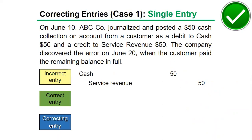To illustrate how we make correcting entries, here is the first case, and we will use the single entry method. On June 10, ABC company journalized and posted a $50 cash collection on account from a customer as a debit to cash $50 and a credit to service revenue $50. The company discovered the error on June 20 when the customer paid the remaining balance in full. The incorrect entry has cash as debit and service revenue as credit.